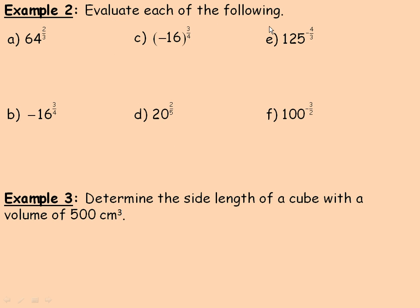In example 2 we are asked to evaluate each of the following. The first one is 64 to the 2 thirds. So the 3 means the cube root of 64, and then we are going to square all that.